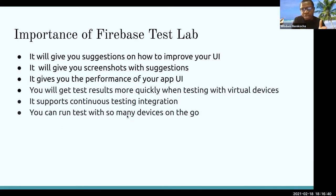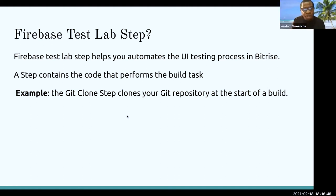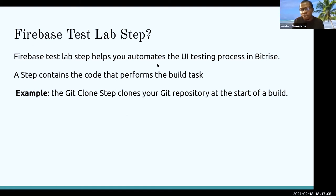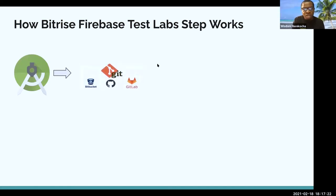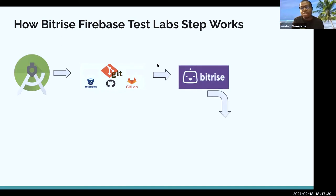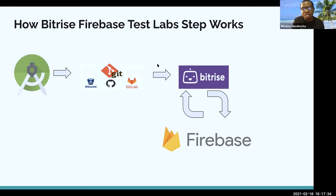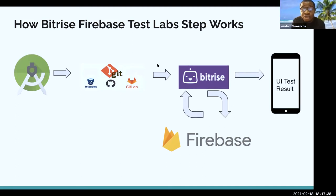Firebase Test Lab has a step in Bitrise. The Firebase Test Lab step helps you automate the UI testing process in Bitrise. A step contains code that performs a given task — for example, the git clone step clones your git repository at the start of the build. How the Bitrise Firebase Test Lab step works: you build your app in Android Studio and push to Bitbucket, GitHub, or GitLab. It then goes to Bitrise, Bitrise sends it to Firebase, Firebase sends results back to Bitrise, and you get your results.